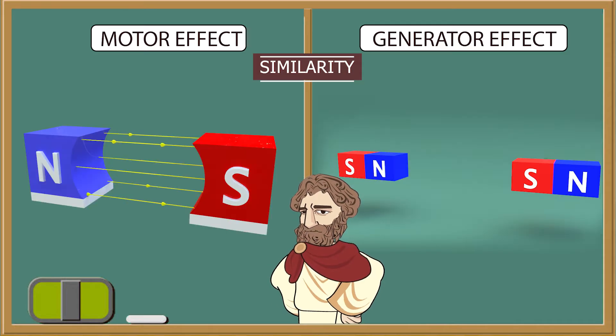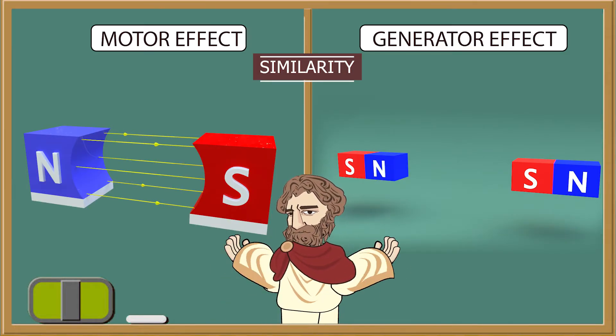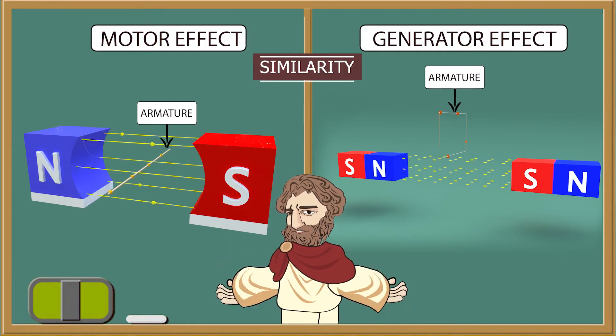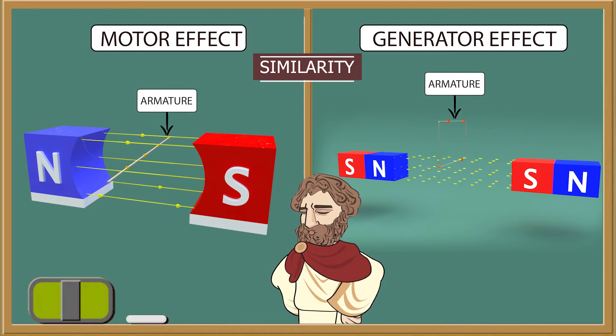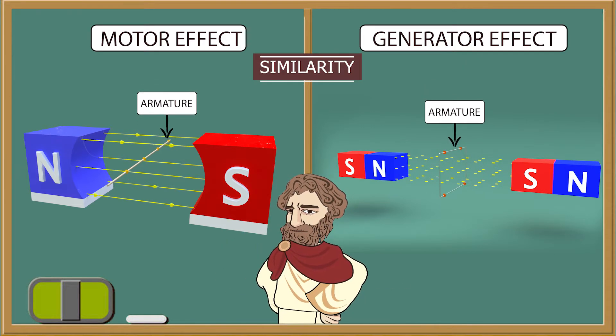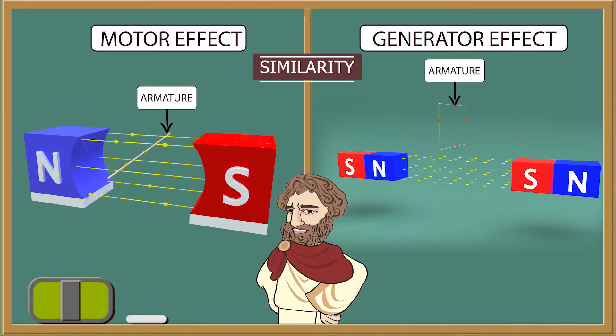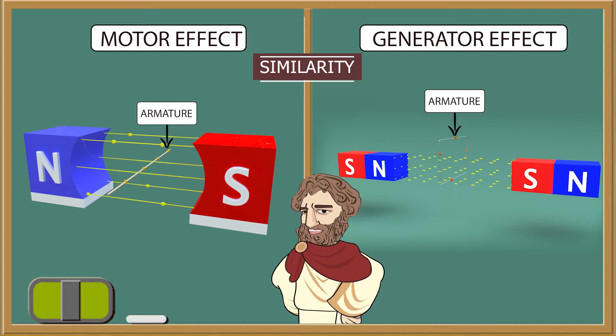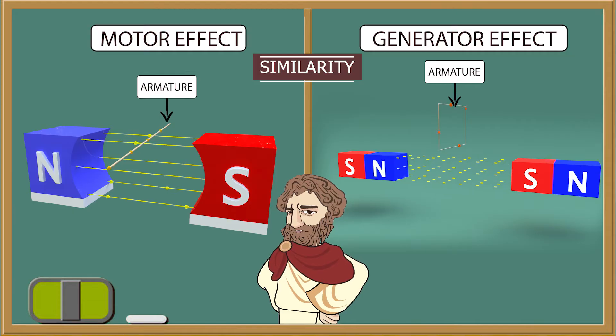Both the motor effect and generator effect require a magnetic field to happen. Armature is used to achieve the effect in both cases. The armature must carry current so it is always a conductor or a conductive coil. The armature's role is two-fold. The first is to carry current across the field and the second role is to generate an electromotive force.